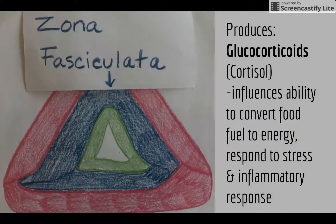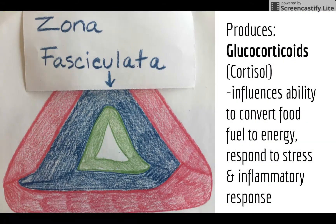Next is the middle layer of the cortex, the zona fasciculata, which produces glucocorticoids, primarily cortisol. Cortisol plays a major role in your body's ability to respond to stress and how your body converts food into energy — for example, it breaks down proteins and mobilizes fats for energy consumption.